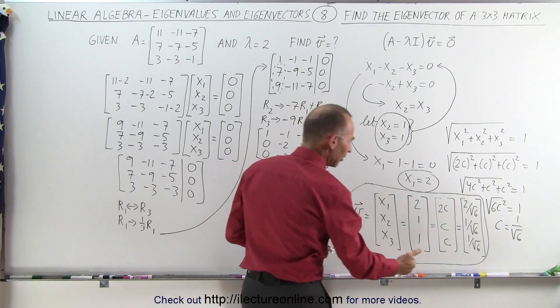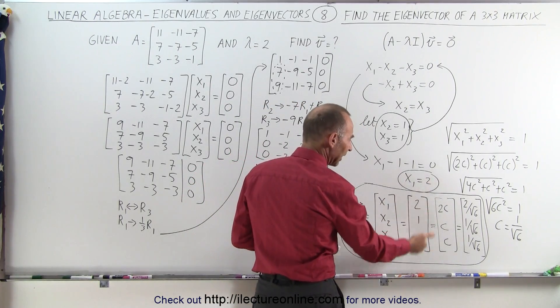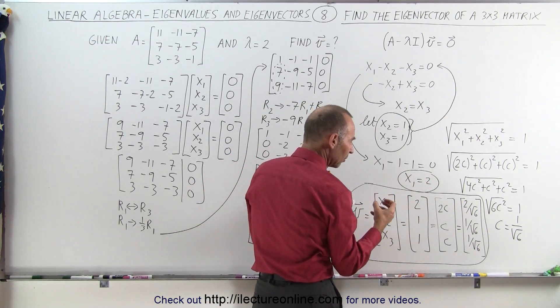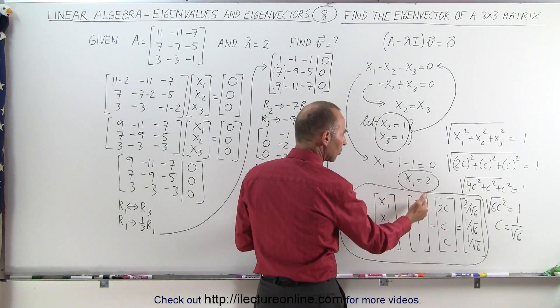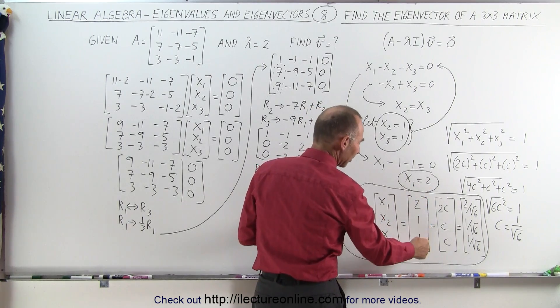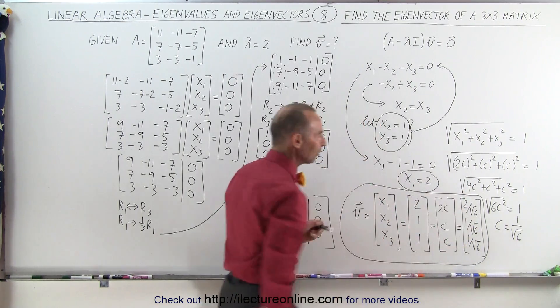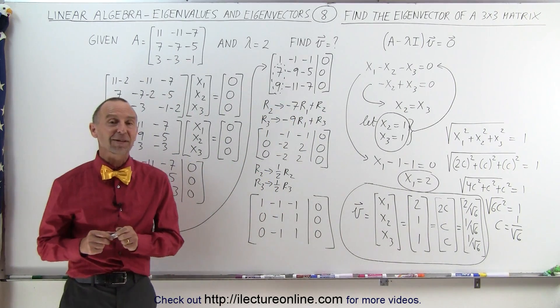But, most textbooks, in most cases, they simply want to leave it like this. Again, it gives you the relationship between x1, x2, and x3. Well, the other way around, x1, x2, and x3. Or, in normalized format. And that's how it's done.